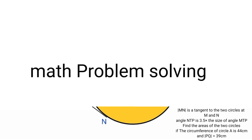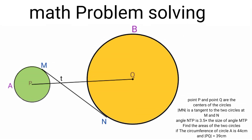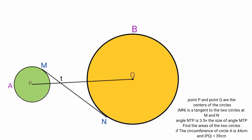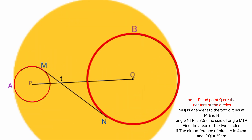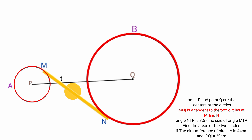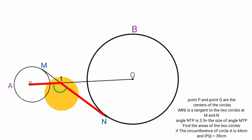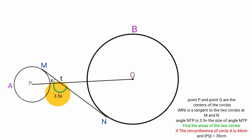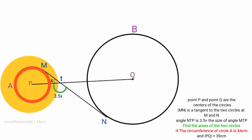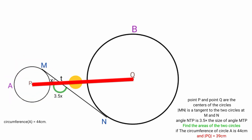Hello, good day viewers. Here is another interesting question we are going to solve today. The question says this point P here and this point Q are the centers of the two circles. This line MN is a tangent to the two circles at M and N, and this angle NTV here is 3.5 times the size of angle MTP. So we can label this X, and this must be equal to 3.5X. Find the area of the two circles if the circumference of circle A here is 44 centimeters and the length of line PQ is 39 centimeters.